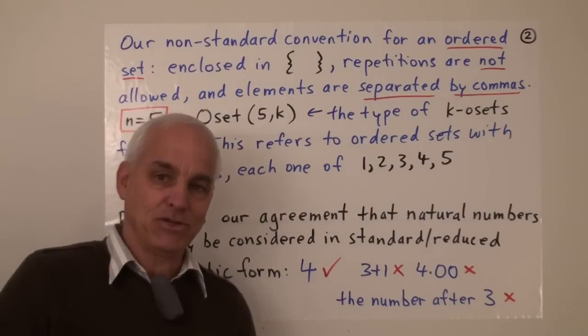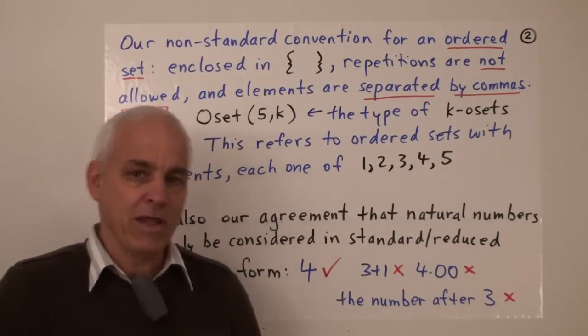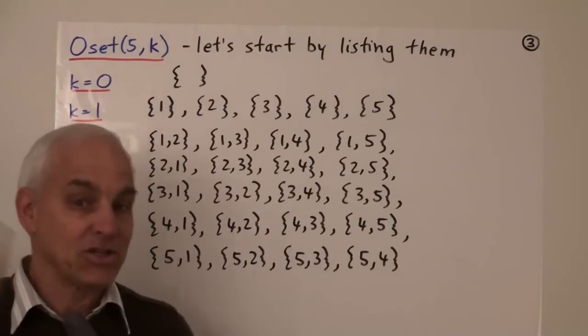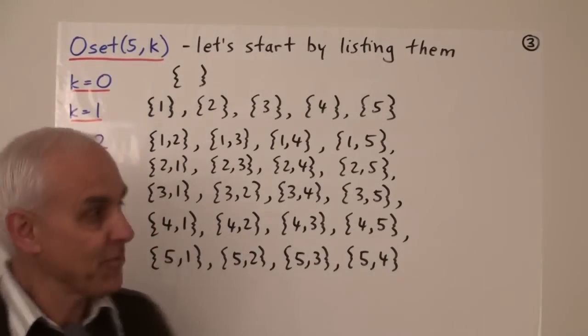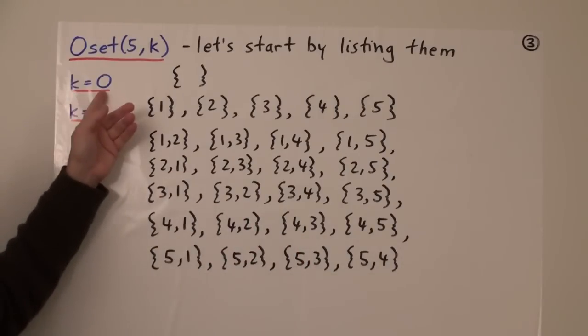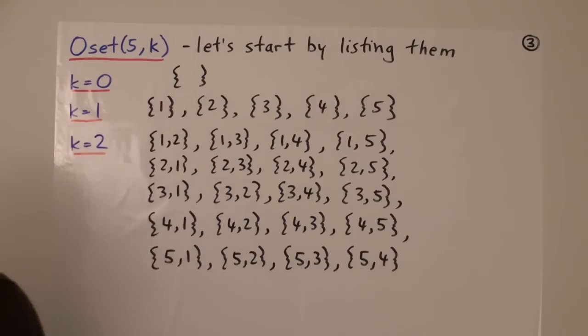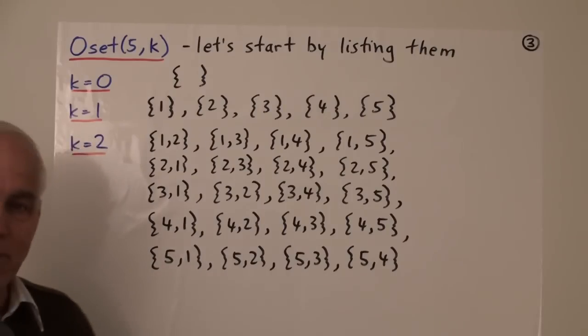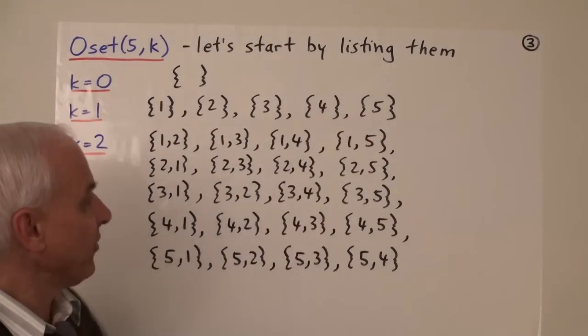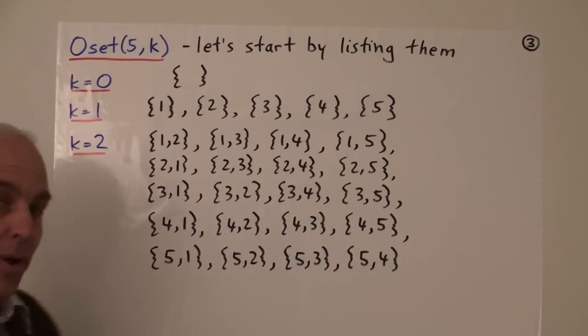And we'll see that there's some interesting connections not only with the symmetric group but also with ringing church bells. So let's start off by listing some of these ordered sets. We'll start with the simplest or smallest ones. So when k equals 0 we're talking about just an empty set. When k equals 1 we're talking about a 1 ordered set. Can only contain one element and there are these 5 possibilities.